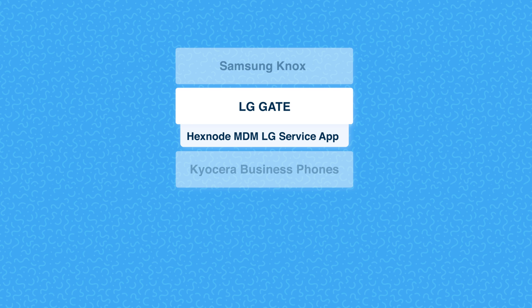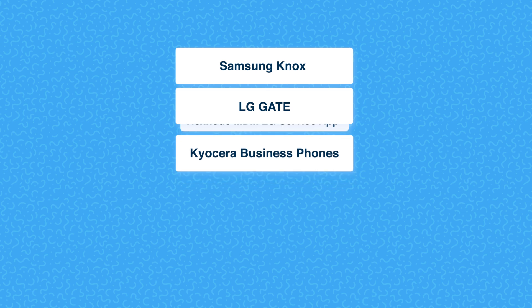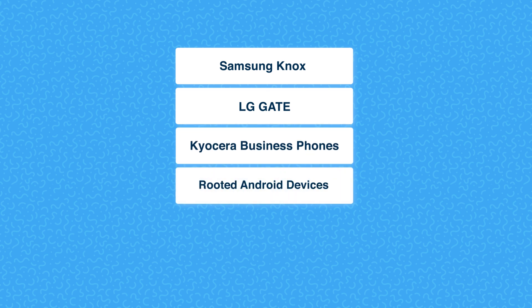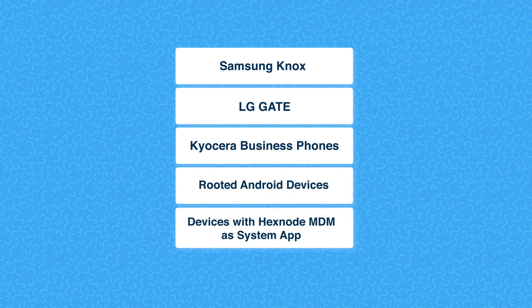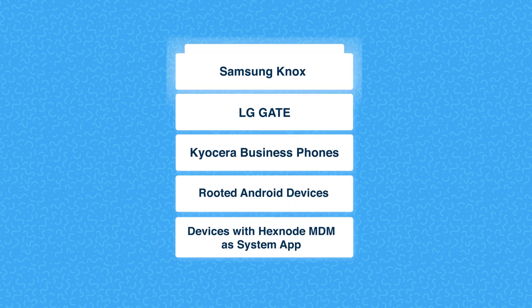For LG Gate devices, ensure that the Hexnode MDM LG service app is installed on the device. For standard Android devices, silent app installation is possible only for rooted devices and devices with Hexnode MDM as a system app.